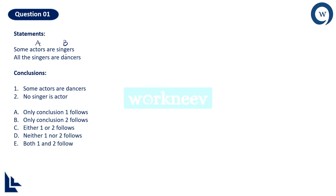Some actors are singers — if I reverse this, I get some singers are actors. Is it there in the conclusion? No, it is not there. Leave it. Let us go for the second statement: all the singers are dancers. The reverse of this is some dancers are singers. That is also not there. But if it were there, that would be absolutely fine. At this point, I cannot conclude whether the two conclusions are valid or not, so I have to write the Venn diagram.